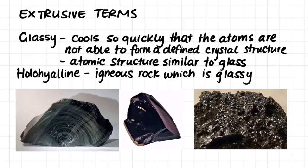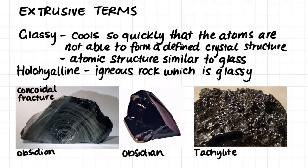This type of rock is called holohyaline. Holohyaline rock often exhibits conchoidal fractures, as we can see in this sample here. A few examples of extrusive glassy igneous rock are obsidian and tachylite. Obsidian is often called volcanic glass because, as you can see, it looks a lot like shattered glass. Tachylite, while it doesn't look like glass, still has an atomic structure similar to glass.